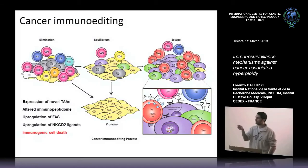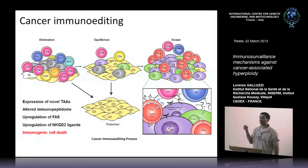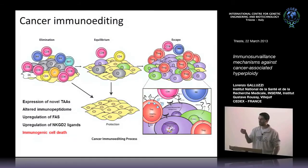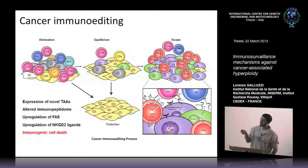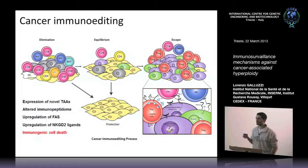Why are these cells recognized by the immune system? For several reasons. First, they express a lot of so-called tumor-associated antigens — mutated proteins the body has never seen before — theoretically able to induce an immune response. They also upregulate stress signals including the FAS receptor, which is a cell death receptor, and other ligands for components of the innate immune system. This is the point where we propose the concept of immunogenic cell death.